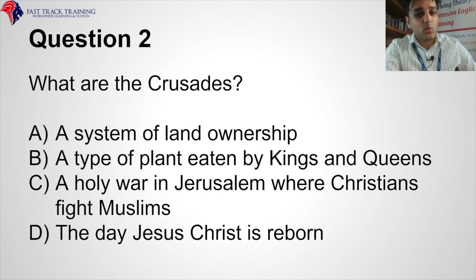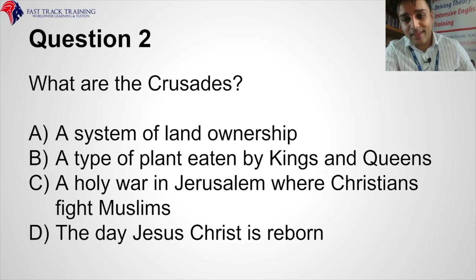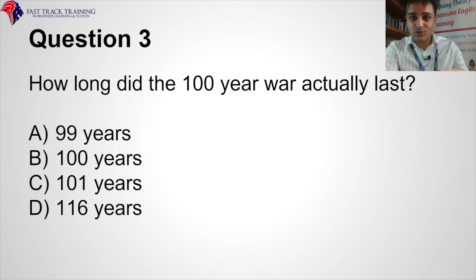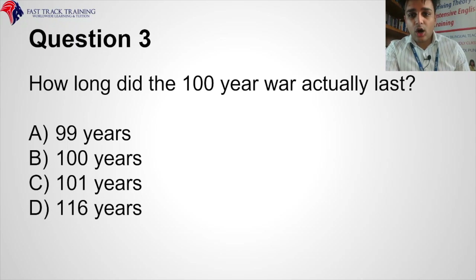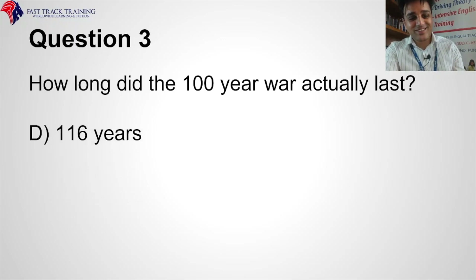Question two: What are the Crusades? A system of land ownership, a type of plant eaten by kings and queens, a holy war in Jerusalem where Christians fight Muslims, or the day Jesus Christ is reborn? The correct answer is a holy war in Jerusalem where Christians fight Muslims — in Palestine, Jerusalem, Gaza, and the West Bank. Question three: How long did the Hundred Year War actually last? 99, 100, 101, or 116 years? The correct answer is 116 years.